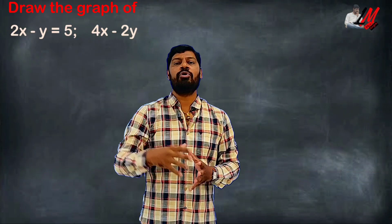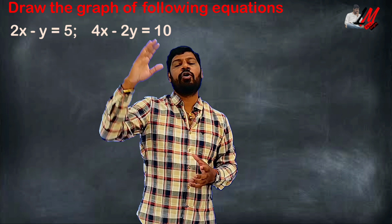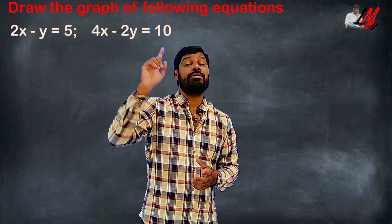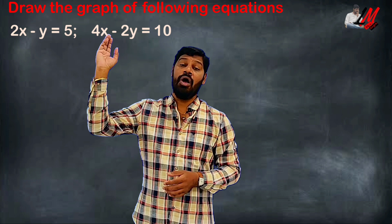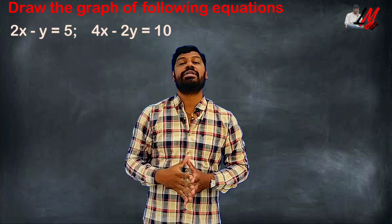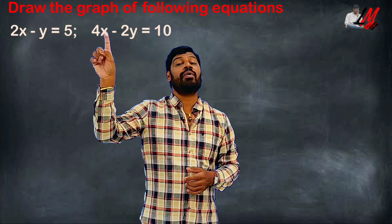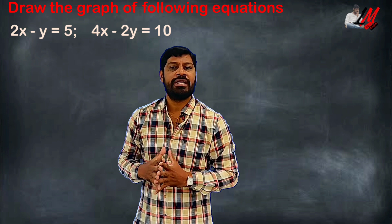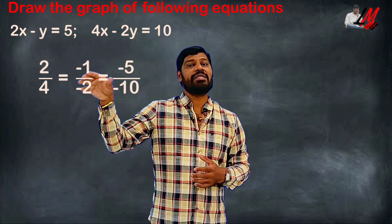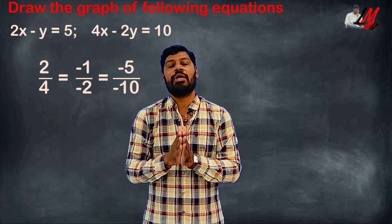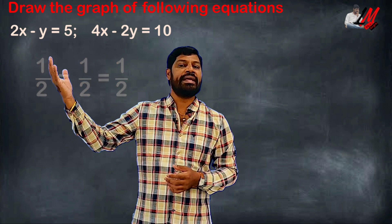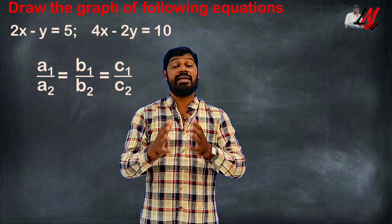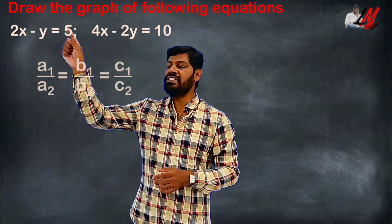Let's take one more example. Draw the graph of 2x minus y equal to 5, and 4x minus 2y equal to 10. We check the ratios: A1 by A2 equals B1 by B2 equals C1 by C2, which all equal 1 by 2. Since all three ratios are equal, this system has infinitely many solutions — the lines are coincident.